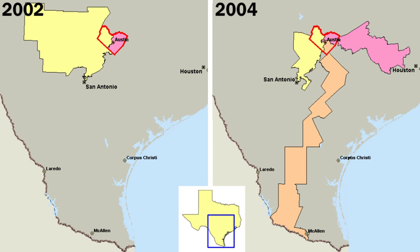Americans became fascinated by and increasingly adopted the political values of republicanism, which stressed equal rights, the need for virtuous citizens, and the evils of corruption, luxury, and aristocracy. None of the colonies had political parties of the sort that formed in the 1790s, but each had shifting factions that vied for power.